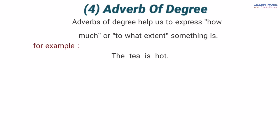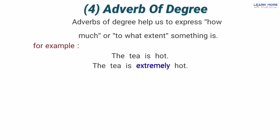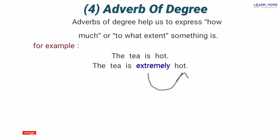Ab dekhen: 'The tea is extremely hot' — chaaye bahut garam hai. Ab yahan par jo 'extremely' hai yeh hamara adverb of degree hai kyunke yeh how much question ka jawab dene mein hamari help kar raha hai — how much the tea is hot? The tea is extremely hot. Jo bhi adverbs of degree hote hain woh humein how much ya to what extent ki category ke questions mein jawab dene ke liye madad karte hain. Yeh hamara adverb of degree kyun hai? Kyunke yeh jo 'hot' ek adjective tha uski degree ko badha raha hai — pehle tha 'the tea is hot', ab hai 'the tea is extremely hot', toh degree badh gayi.